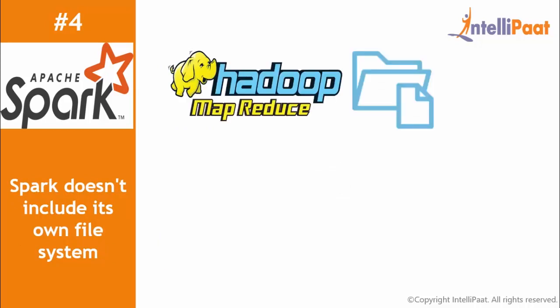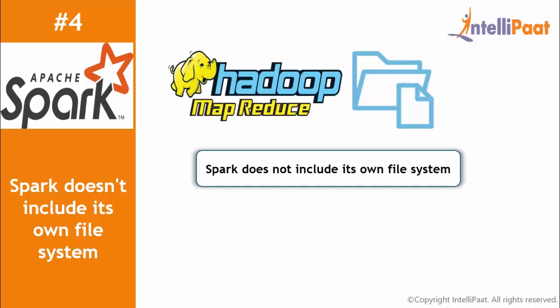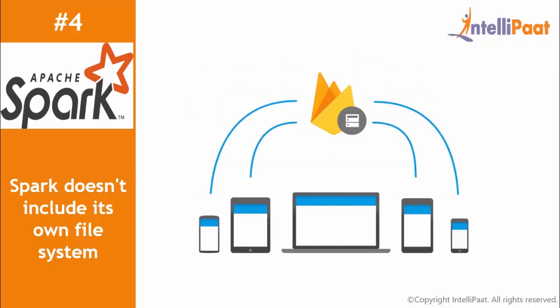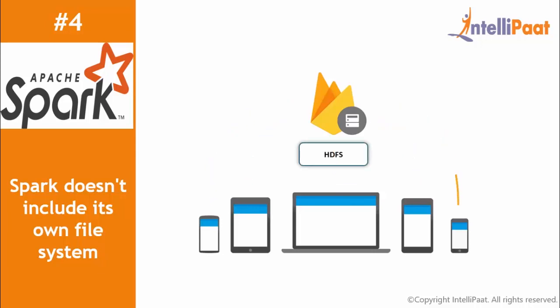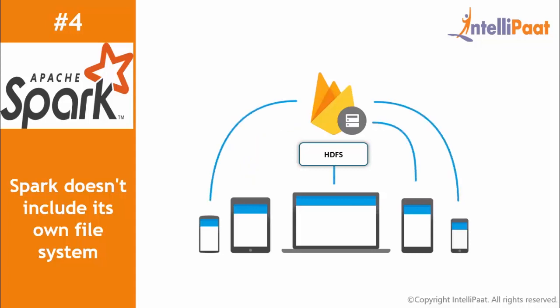Unlike Hadoop, which has its own file system, Spark does not include its own file system. Though it can run in standalone mode and access data from various sources, in general it accesses data from the Hadoop Distributed File System, HDFS. In short, Spark does not include its own file management system — rather, it needs to be integrated with some form of file management system such as HDFS.